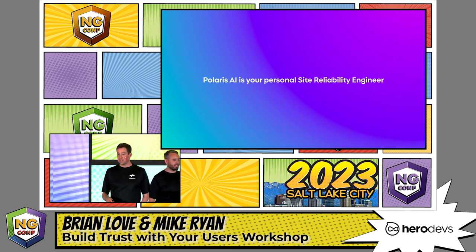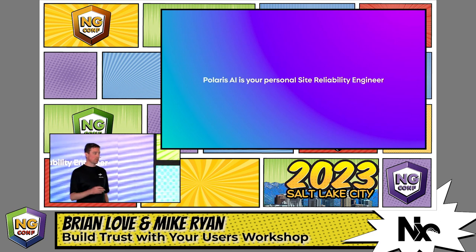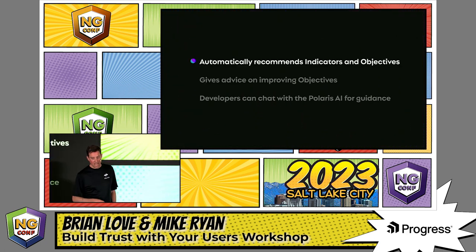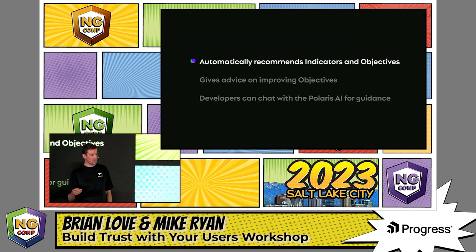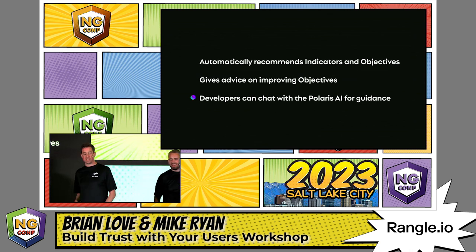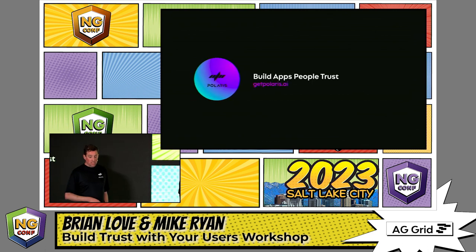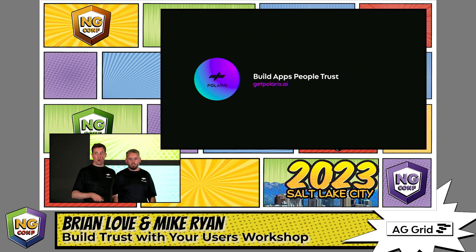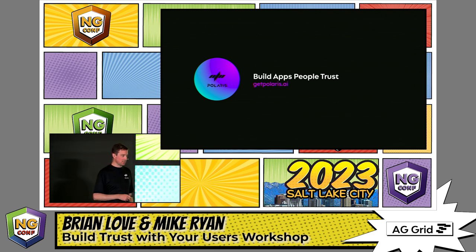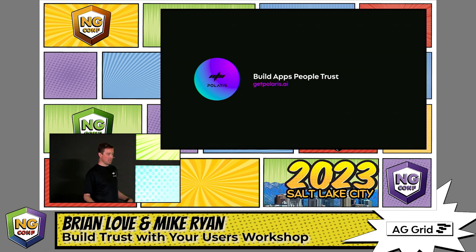We're really excited about the Polaris AI — your personal SRE. You don't need to go out and hire an SRE team. With Polaris, we've built an AI tool that's going to help you conquer site reliability for your web app. The Polaris AI will automatically recommend indicators and objectives based on your measurement data, give advice on improving those objectives, and you can chat with it for guidance around your site reliability. Polaris is up and available. We'd love to talk to you in the hallway and learn more. You can check us out online at getpolaris.ai. Thank you so much for your time.